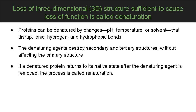Protein denaturation and folding. Because proteins are supported by weak bonds, different factors — such as changes in pH, temperature, or solvents — can disrupt ionic, hydrogen, and hydrophobic bonds. This causes loss of three-dimensional structure, including quaternary, tertiary, and secondary structure. However, the primary structure is not affected, as it is supported by stronger covalent bonds. If a denatured protein returns to its native state after the denaturing agent is removed, the process is called renaturation — returning to the natural structure.